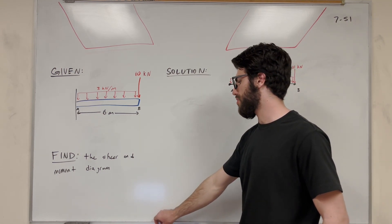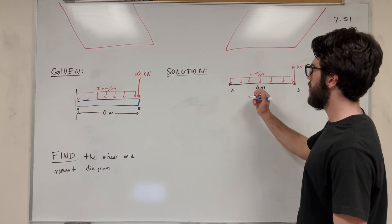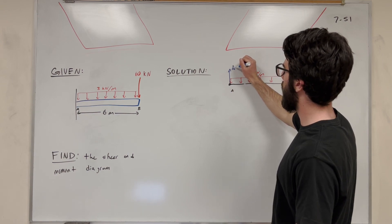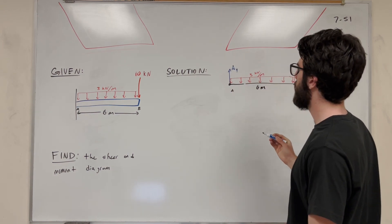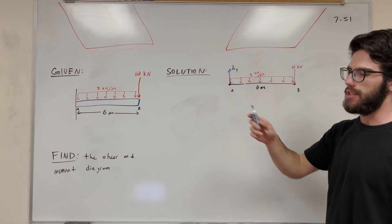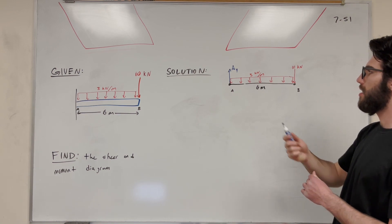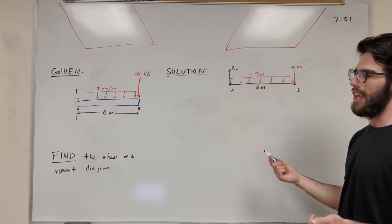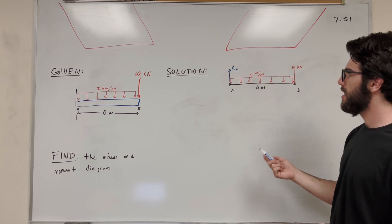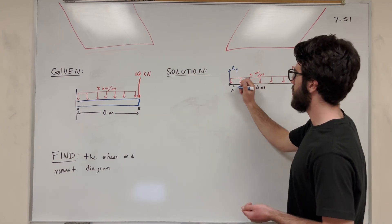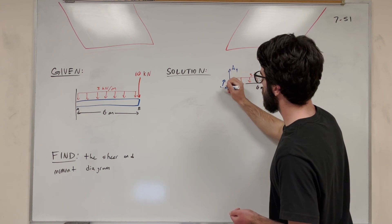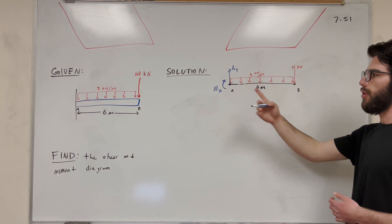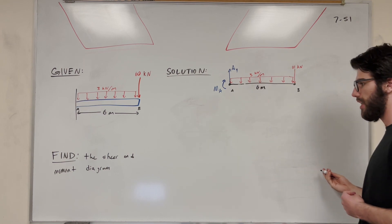What do we not know? Well, we know there's a support reaction at A. So what are the support reactions? We have A_Y pushing back up. There's going to be A_X because it's a fixed beam, but we can tell that because there are no other forces acting in the X direction, A does not have any X forces. And finally, we have a moment at A. So let's draw our moment like this — this is the moment of A.